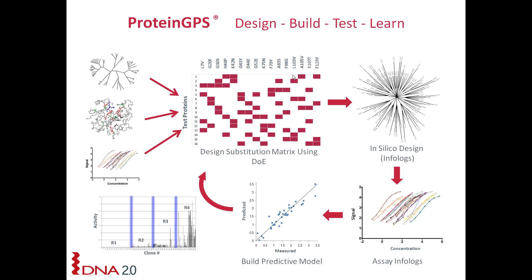We combine these variables in a systematic way, design them, synthesize them, and design them to be equidistant from everything else, making sure that we test every single variable in as different a context as possible. These are then synthesized and tested for whatever low-throughput, high-quality function that you can assess.